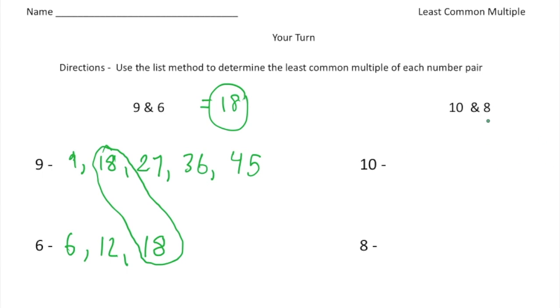Now the last one, 10 and 8. Well, let's list the multiples of 10. So it's going to be 10, 20, 30, 40, and 50.